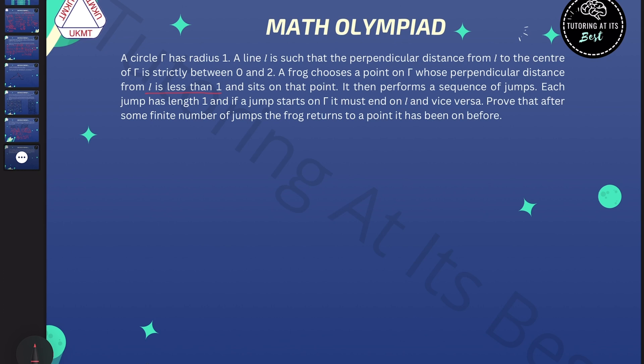Prove that after some finite number of jumps the frog returns to a point it has been on before.